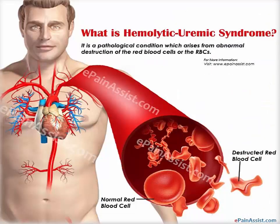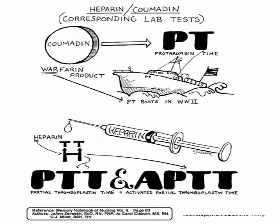Hemolytic uremic syndrome is a condition that results from the abnormal premature destruction of red blood cells. Once this process begins, the damaged red blood cells start to clog the filtering system in the kidneys, which may eventually cause life-threatening kidney failure. Most cases occur after an E. coli infection, but often the cause is obscure. Prothrombin time (PT) is testing used to determine whether coumadin is at a therapeutic level. Partial thromboplastin time (PTT) is used to determine whether heparin is at a therapeutic level. International normalized ratio (INR) is an index of blood coagulability.